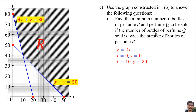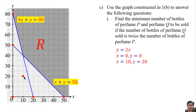The number of bottles of perfume Q is Y. Price means 2, and the number of bottles of perfume P is X, so 2X. Y equals 2X. We need to draw this equation on the graph. When X is 0, Y is 0; when X is 10, Y is 20. Connect both points.